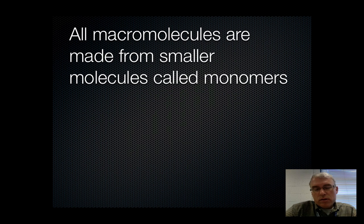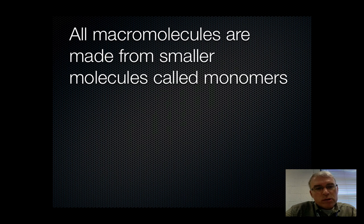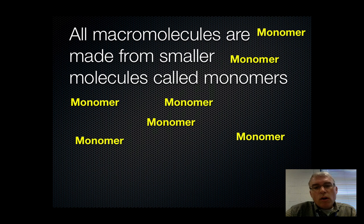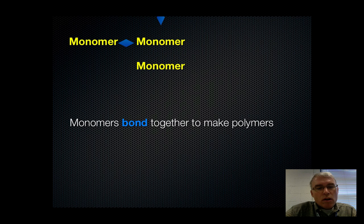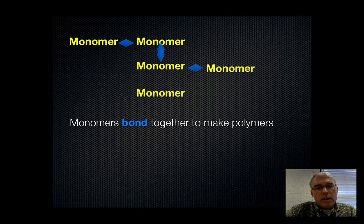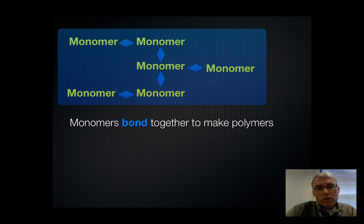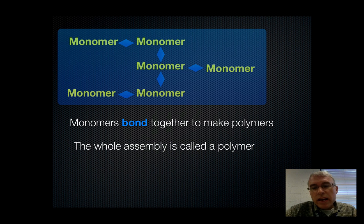Well, macromolecules, just as the word implies — macro means larger — are the molecules of life that are built from smaller molecules put together. These smaller molecules are called monomers. If you have a whole bunch of identical or very similar little molecules and you hook them together, building polymers out of monomers, you build a large macromolecule. If you watch this little animation here, you can see we're hooking together monomers with bonds to build a polymer. When we're finished, the whole structure can be referred to as a macromolecule or a polymer because it has many pieces — that's where the prefix poly comes from.